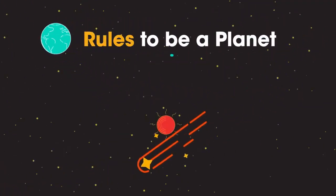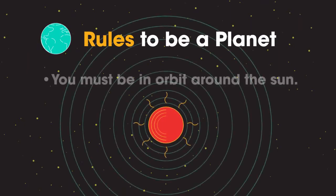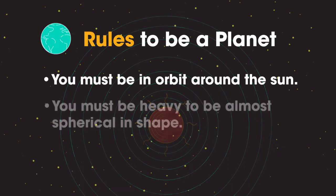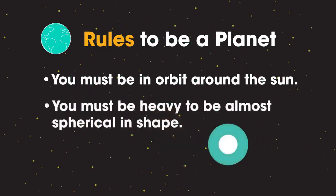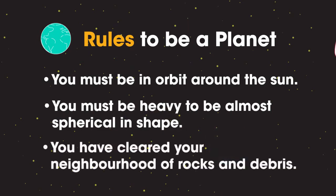There are certain rules to be a planet. Firstly, you must be in orbit around the Sun. Secondly, you must be heavy enough to be almost spherical in shape. And thirdly, you have cleared your neighborhood of rocks and debris.